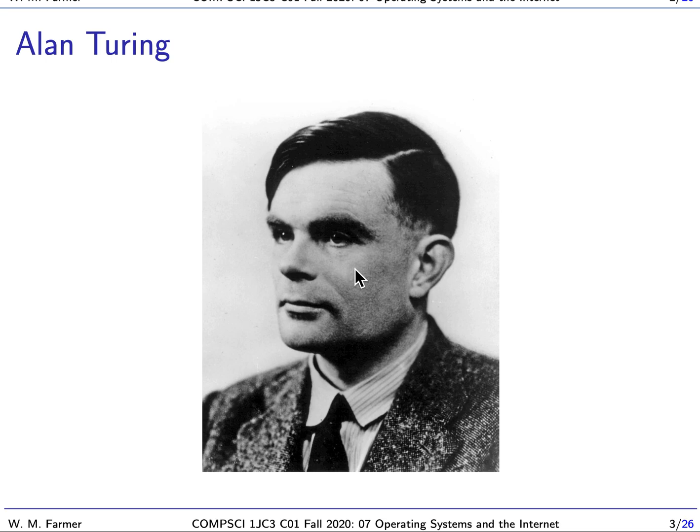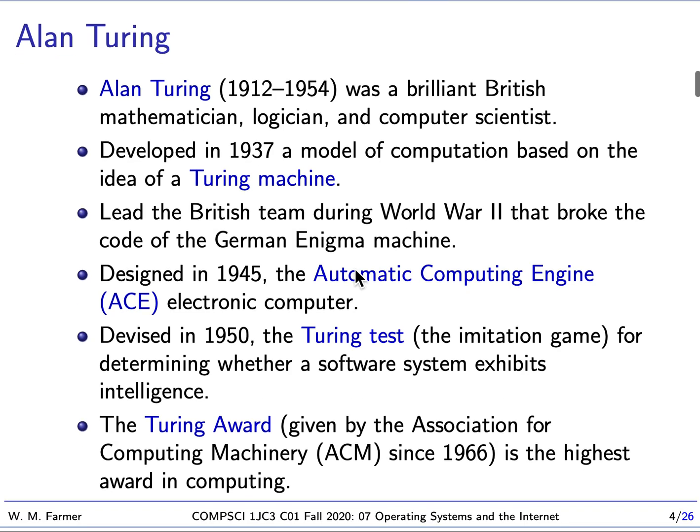Here's a picture of him. We talked about Alan Turing before, but he's a hugely important person in the history of computing. He was a brilliant mathematician, logician, and computer scientist from the United Kingdom. He's most known for developing a model of computation based on the idea of a Turing machine. This model of computation is relatively close to how computers work today, compared to other models like the lambda calculus and combinatorial logic.